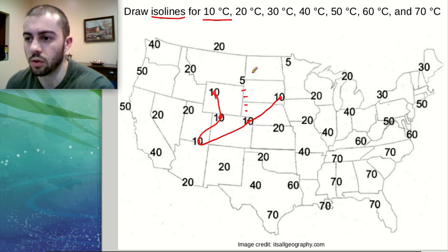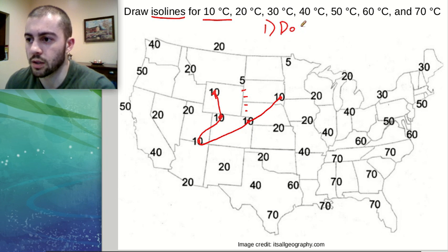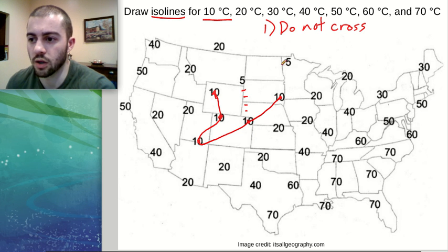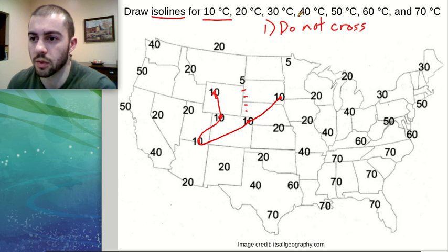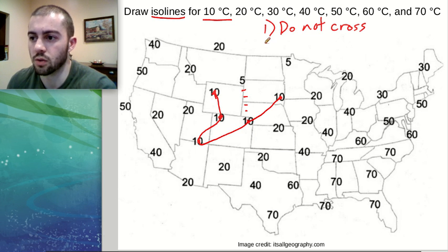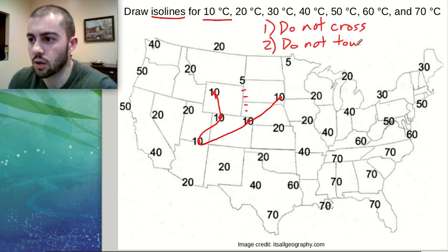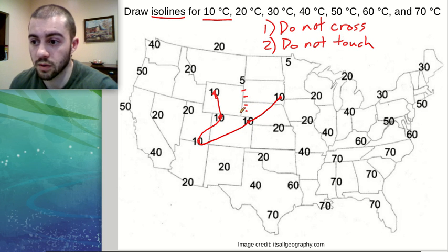There are a couple of rules to follow when drawing ISO lines. The first rule is: do not cross — do not let your ISO lines cross over each other. The second rule is: do not touch — we don't want our ISO lines to touch each other or to touch themselves, unless we're connecting them in a loop.